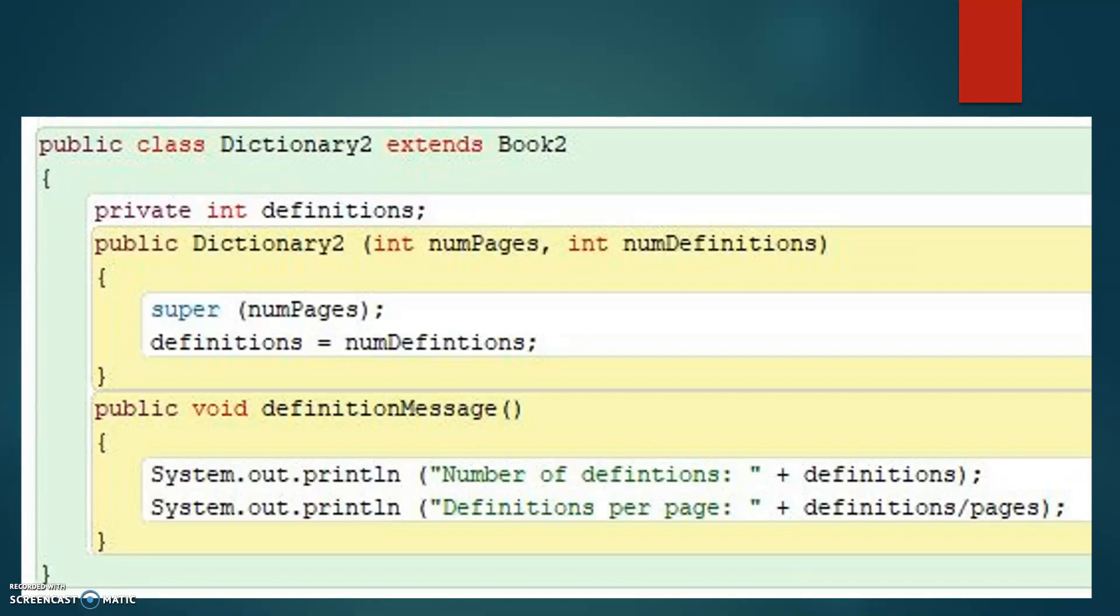So we use the super reference to get it in the parent class. The Dictionary2 constructor then initializes its definitions variable.